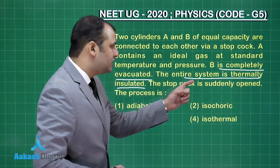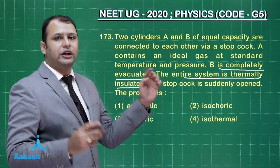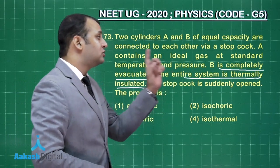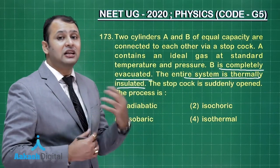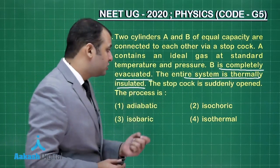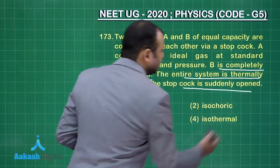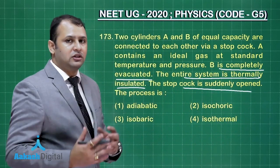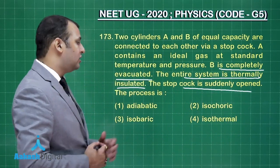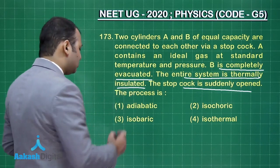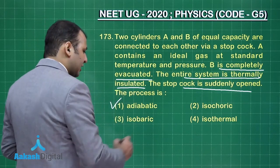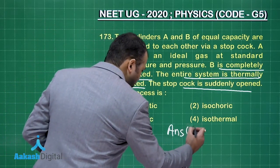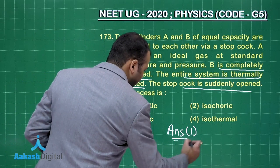That means, first, the heat cannot enter or exit the system. Second, the process is going to happen suddenly because when you open the stopcock, the gas will rush from one side to another. So this is a sudden process. That's why this process would be an adiabatic process. So the answer to this question would be option number 1.